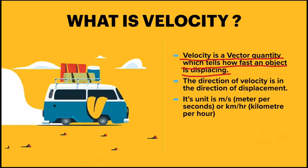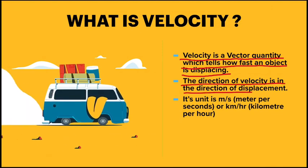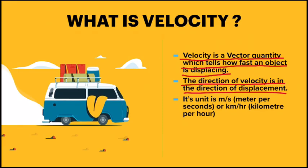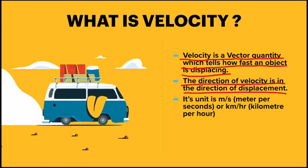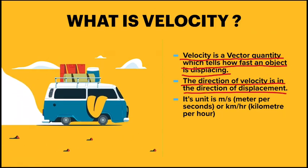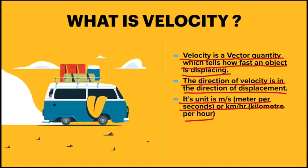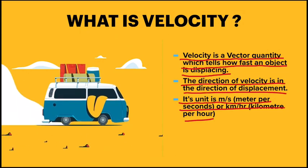The direction of velocity is the direction of displacement. We studied about displacement in the last class. So whatever direction the displacement has, the velocity direction will be the same. For example, if the displacement of an object is 3 km north, then the velocity's direction will also be north. And the last point is its unit is meter per second or kilometer per hour, same as speed.